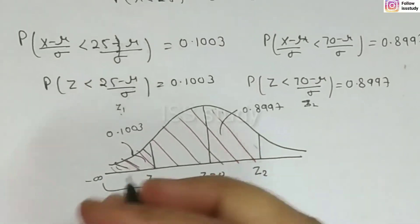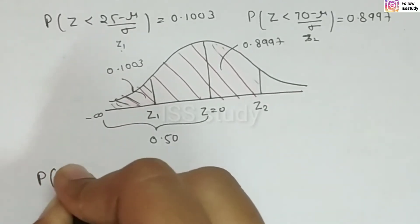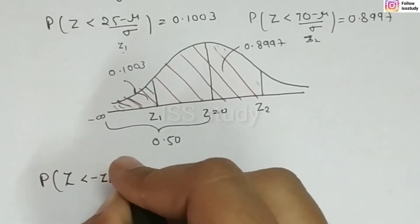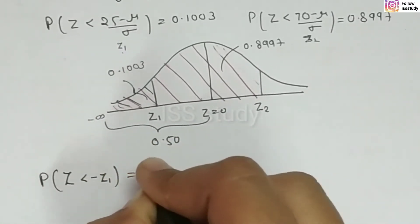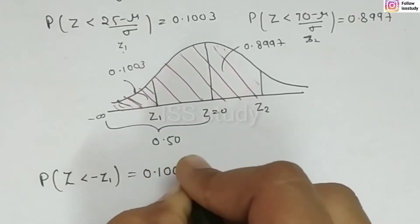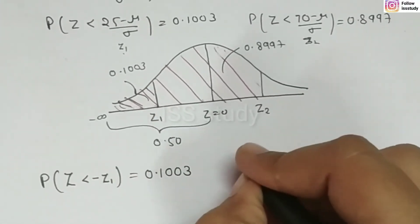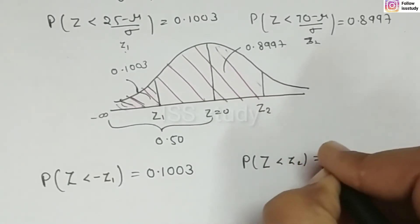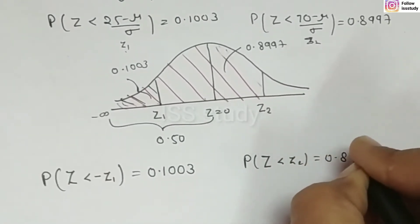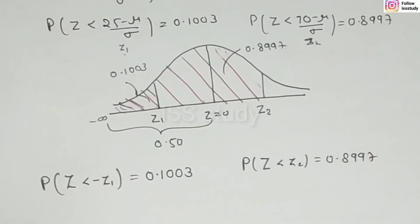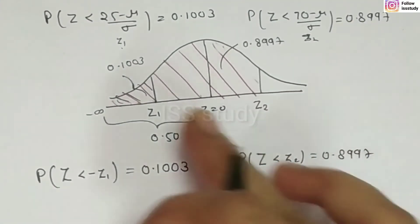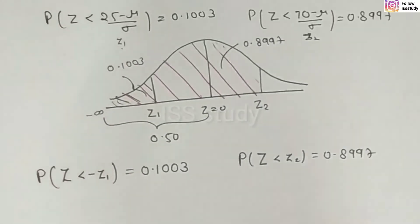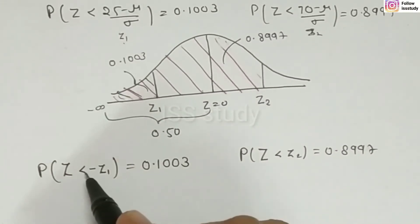We can use symmetry here. We write: probability Z is less than negative Z1 equals 0.1003, and probability Z is less than Z2 equals 0.8997. Here Z2 is positive and Z1 is taken as negative.